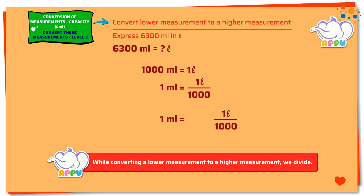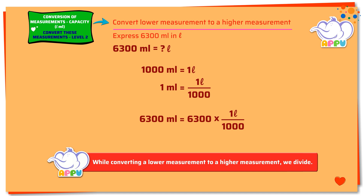Multiplying both sides by 6300, we get 6300 times 1 milliliter equals 6300 times 1 liter divided by 1000. 6300 times 1 liter divided by 1000 equals 6.3 liters. So 6300 milliliters equals 6.3 liters.